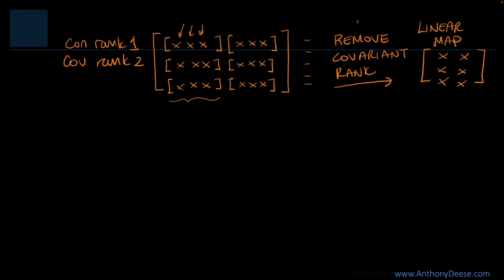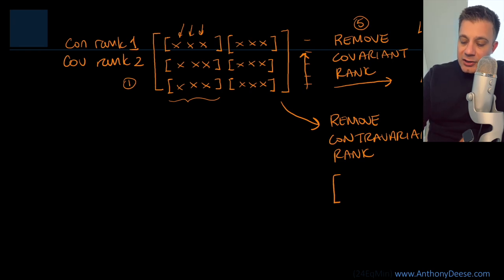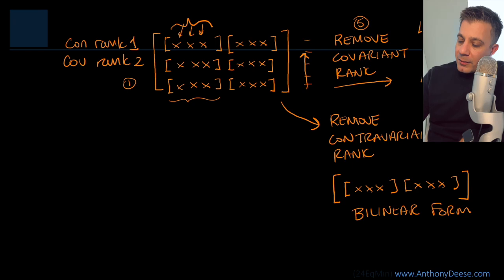That collapse to a linear map is case 5. When we instead remove the contravariant rank, we no longer have different rows — everything gets pushed into a single row, but the sub-elements remain. What we end up with is a bilinear form: contravariant rank zero, covariant rank two. So removing the covariant rank gives us contravariant rank 1, covariant rank 1; removing the contravariant rank gives us contravariant rank 0, covariant rank 2.